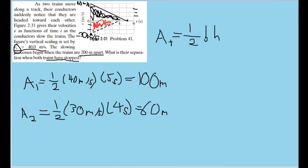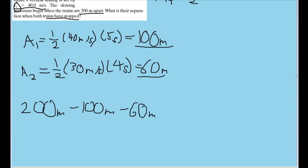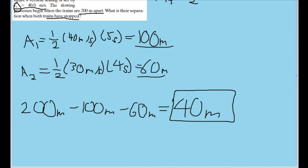Now to find the final separation, we'll need to take the train's initial separation and subtract both of these components. So if the initial separation distance between both trains is 200 meters, and one train is reducing that separation by 100 meters, and the other train is reducing that separation by an additional 60 meters, we subtract these together and we find a distance of 40 meters. Meaning once both trains have stopped moving, they are now 40 meters apart from one another.